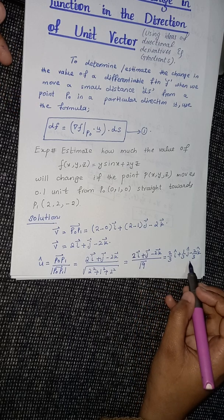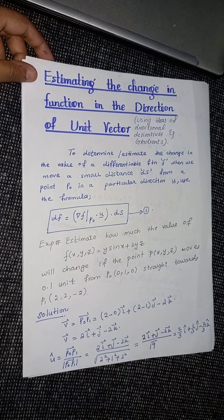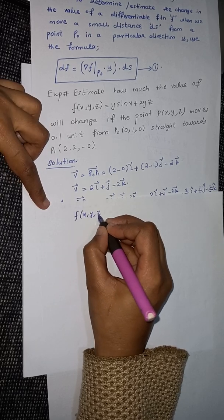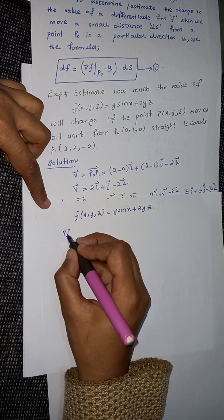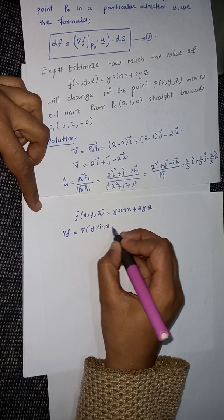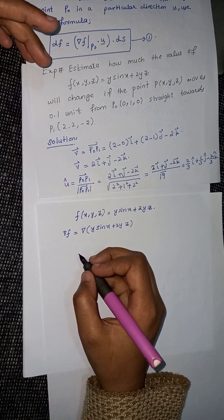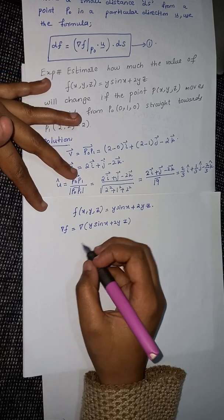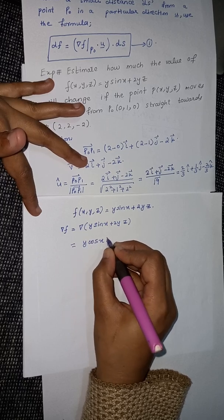We compute the magnitude of v and simplify to get the unit vector û. Now, in our formula we also need to find the gradient of f at the point p₀. Our function is f(x, y, z) = y·sin(x) + 2yz. If you don't know how to find the gradient of a function, you can refer to my previous videos.